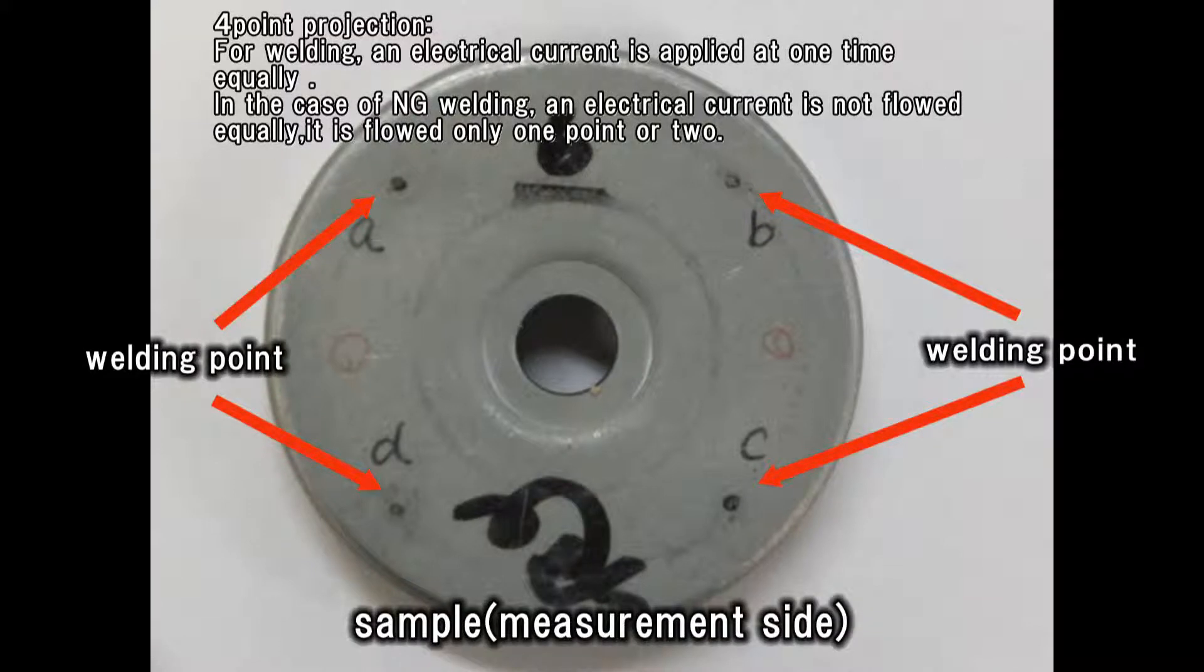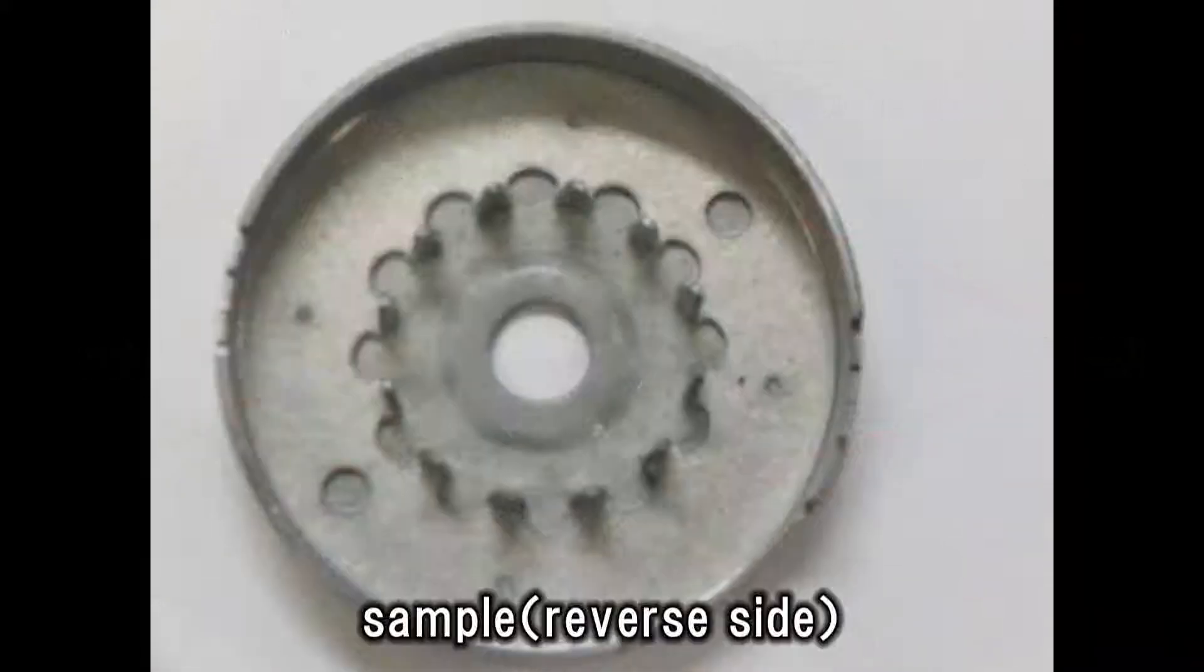On four points on a test piece, projection welds are arranged on a concentric circle. When current flows unequally on welds, poor weld occurs.